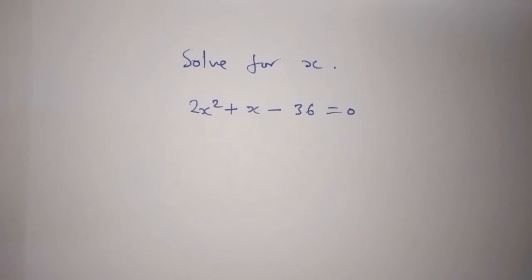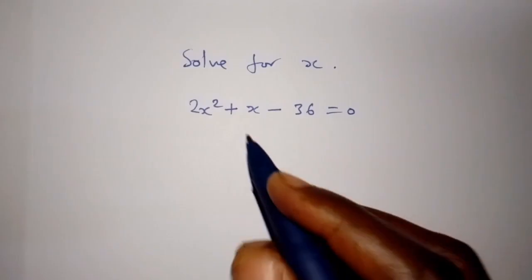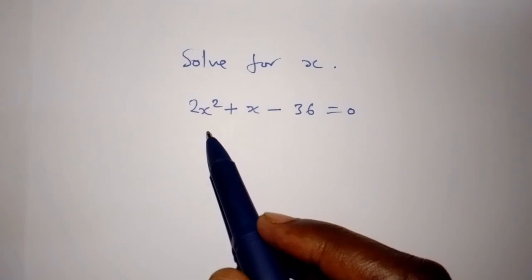Solve for x. 2x squared plus x minus 36 is equal to 0. We are going to use the factor method.